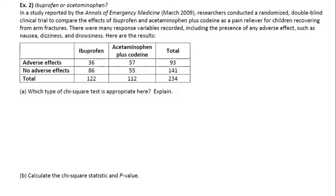The next example: ibuprofen or acetaminophen. In a study reported by the Annals of Emergency Medicine, researchers conducted a randomized double-blind clinical trial to compare the effects of ibuprofen and acetaminophen plus codeine as a pain reliever for children recovering from arm fractures. There were many response variables recorded, including the presence of any adverse effects such as nausea, dizziness, and drowsiness. We have the two treatment groups with 122 subjects in the ibuprofen group and 112 in the acetaminophen plus codeine group, and their responses regarding adverse effects.